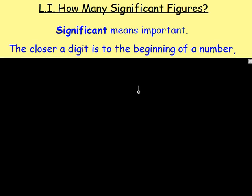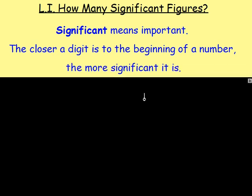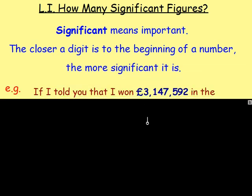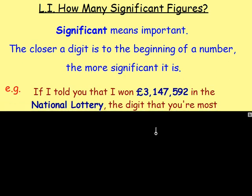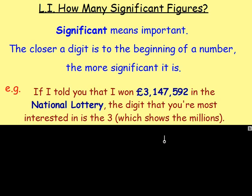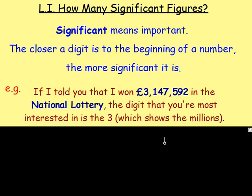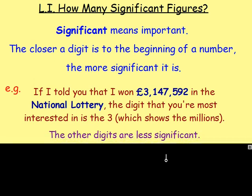In terms of digits, in terms of numbers, the closer a digit is to the beginning of a number, the more significant it is. For example, if I told you that I won £3,147,592 in the National Lottery, well, the digit that you are most interested in is what? Is it the 3 for the 3 million? Is it the 7 for the 7,000? Or is it the 92 on the end? It's the 3. You're more interested in the 3 because it shows the millions — that is what you want. You want to know that I won about 3 million. So really, the closer a digit is to the start of a number, the more significant it is.